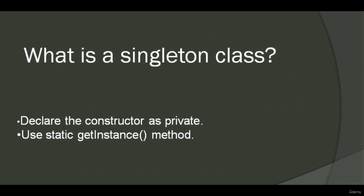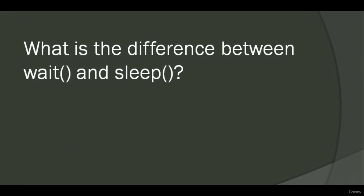What is a singleton class? A singleton class in Java means we cannot create more than one instance for a class; we can create only one object for the singleton class. Even if we try to create a second instance, it will refer to the first instance. We can create a singleton class by declaring the constructor as private and using a static getInstance method. What is the difference between wait and sleep? Wait is part of the Object class and can release the lock. Sleep is part of the Thread class and cannot release the lock.